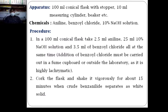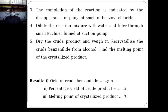After adding all required chemicals in the 100 ml conical flask, cork the stopper and shake the conical flask rigorously for 20 to 30 minutes. During shaking, a crude white solid product separates out inside the conical flask. The completion of the reaction is indicated by disappearance of the pungent smell of benzoyl chloride. Once the pungent smell disappears, the reaction is complete.